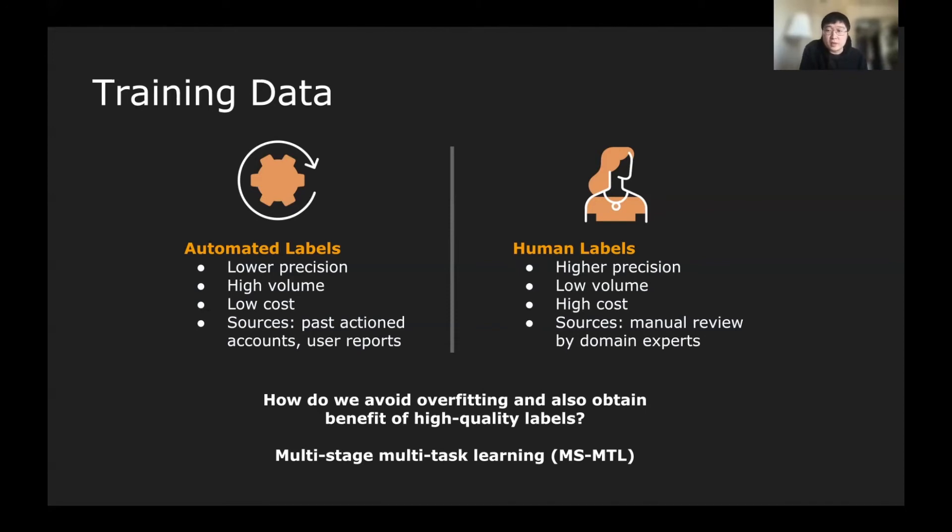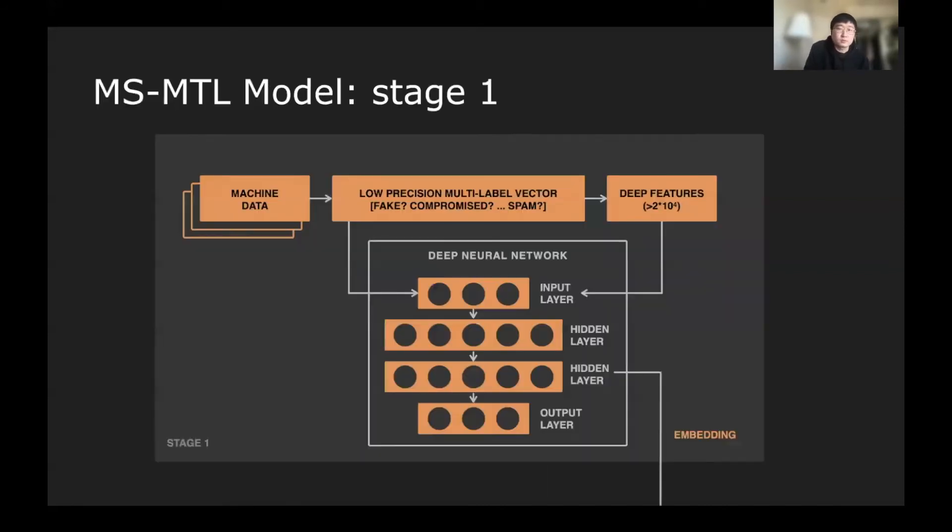The proposal from Deep Entity Classification Framework is to use multi-stage and multi-task learning architecture. Here's the model architecture. In the first stage, we leverage the low-precision automated and multi-label data with the second order of deep features, and in this case, it's actually more than 20,000 features, and then we dump them into a multi-task deep neural network model. From there, we extract the embedding from the last hidden layer of the deep neural network and feed them to the second stage.